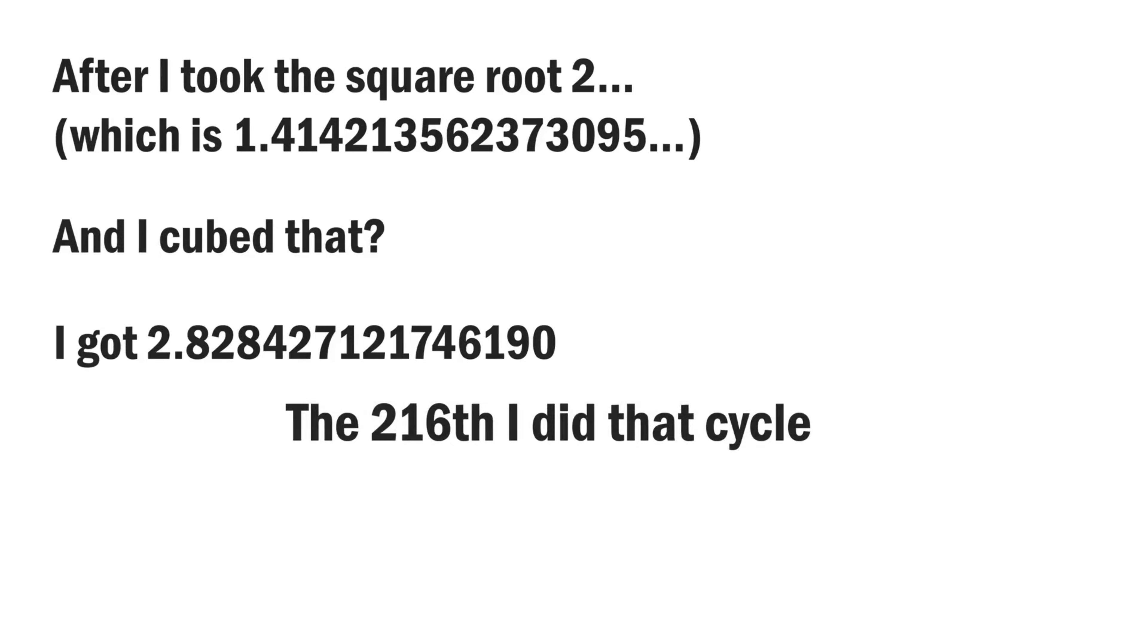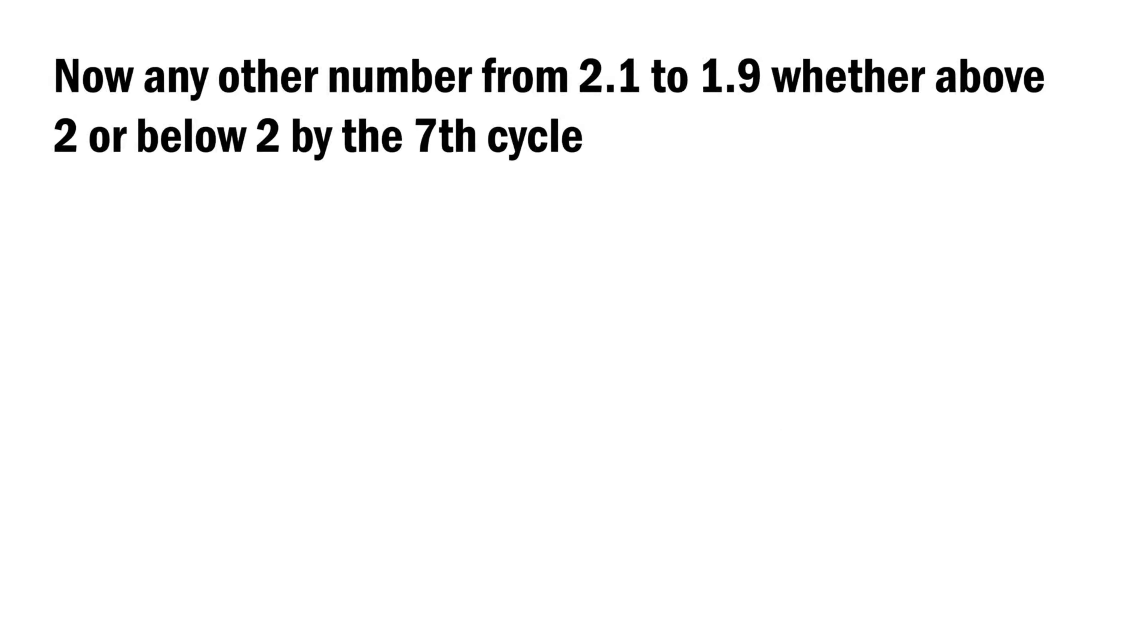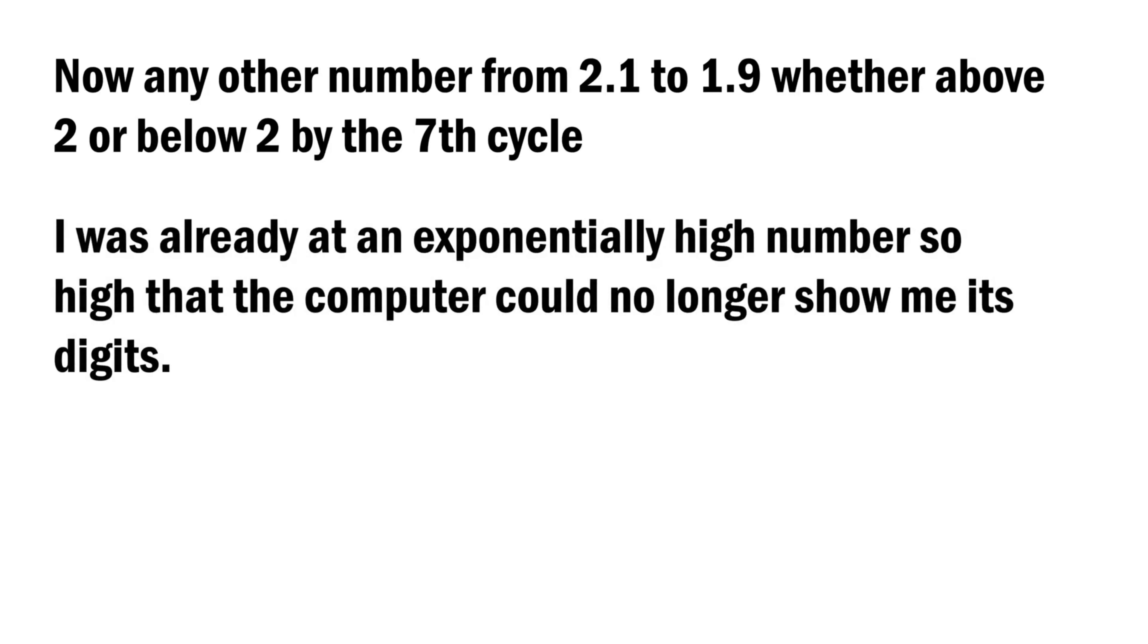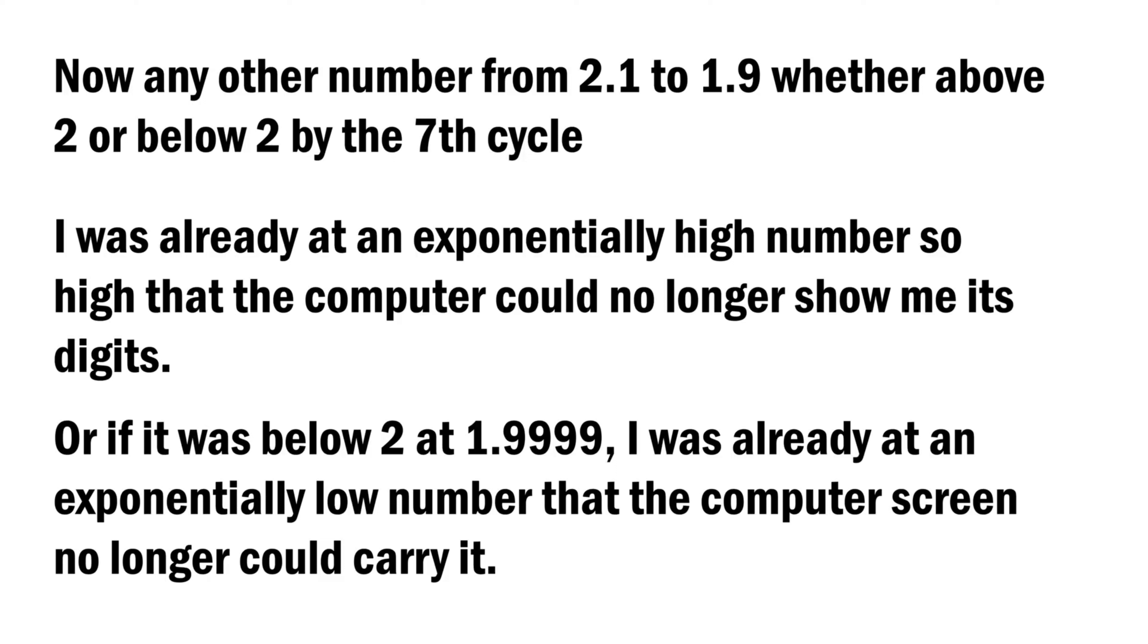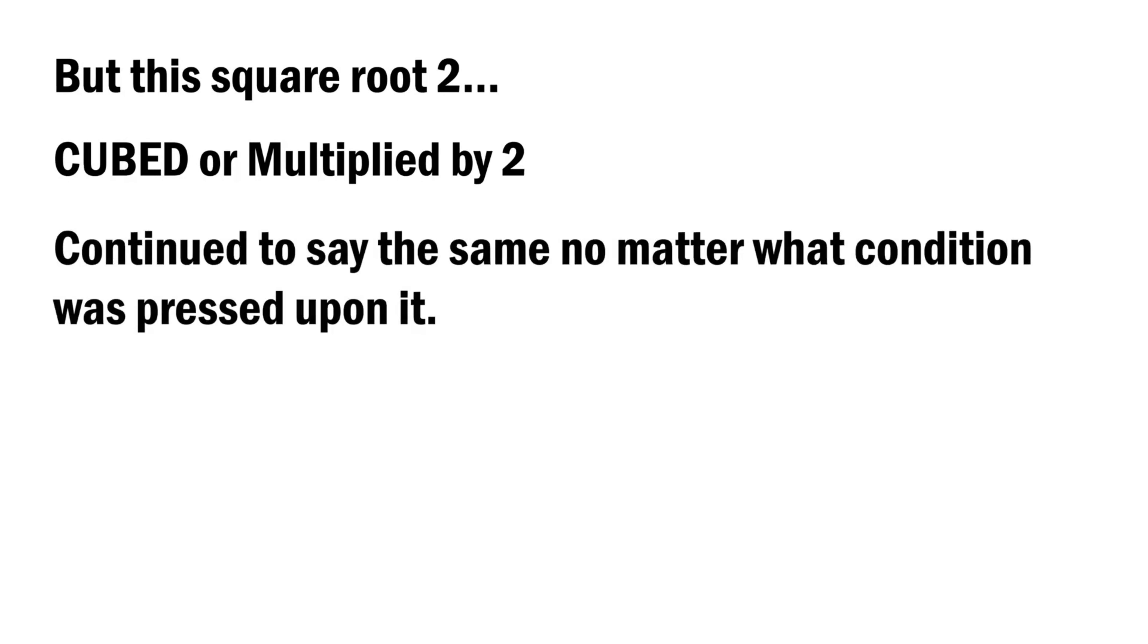The 216th time that I did that cycle. Now any other number from 2.1 to 1.9, whether above 2 or below 2, by the seventh cycle, I was already at an exponentially high number, so high that the computer could no longer show me its digits. Or if it was below 2 at 1.9999, I was already at an exponentially low number that the computer screen no longer could carry.